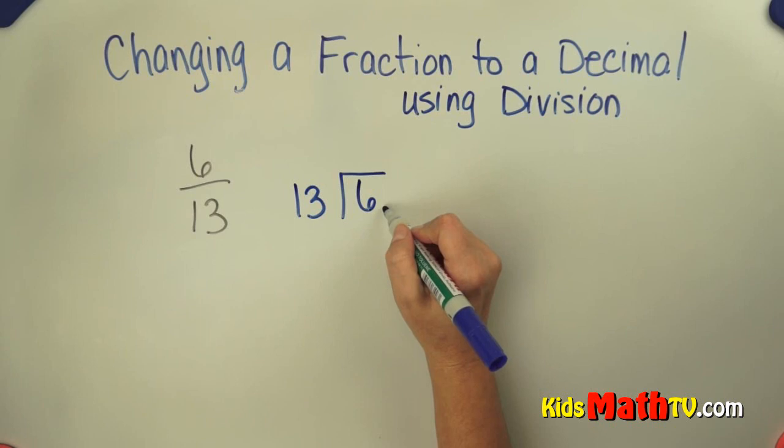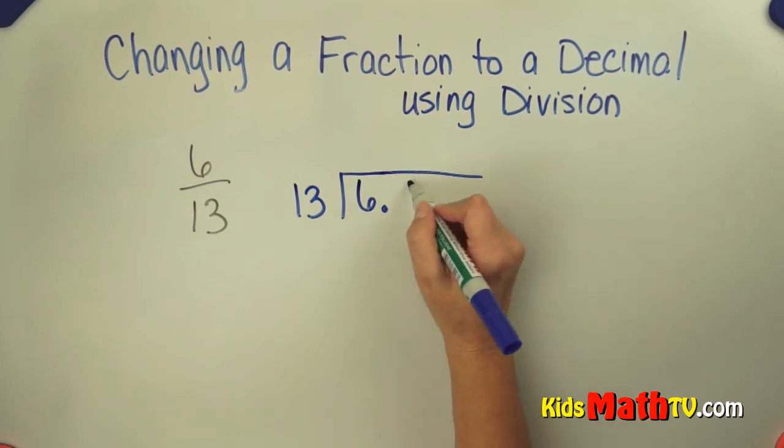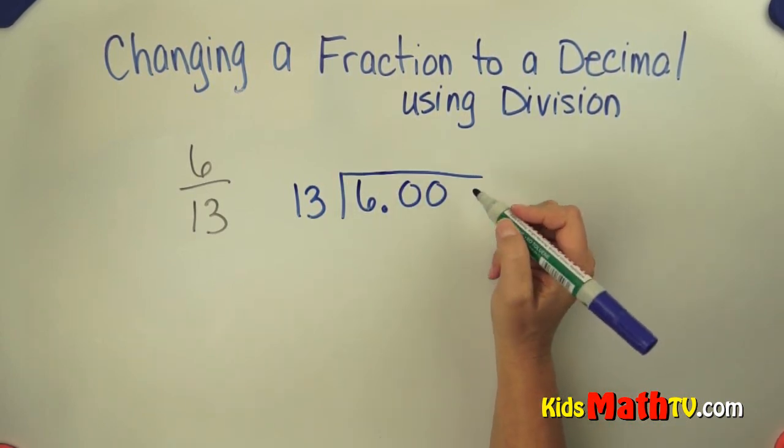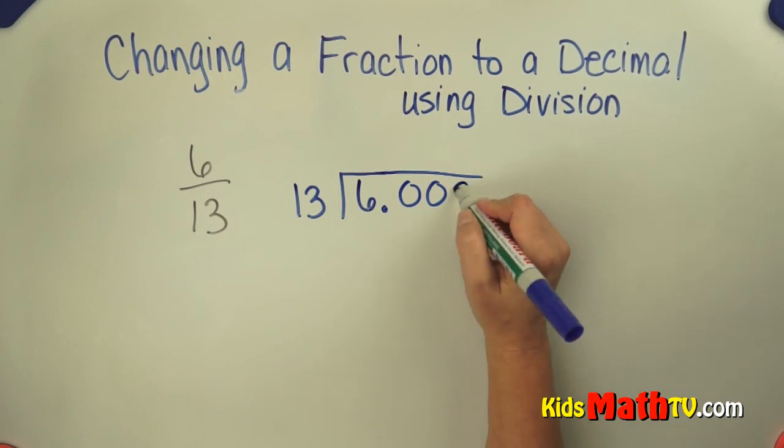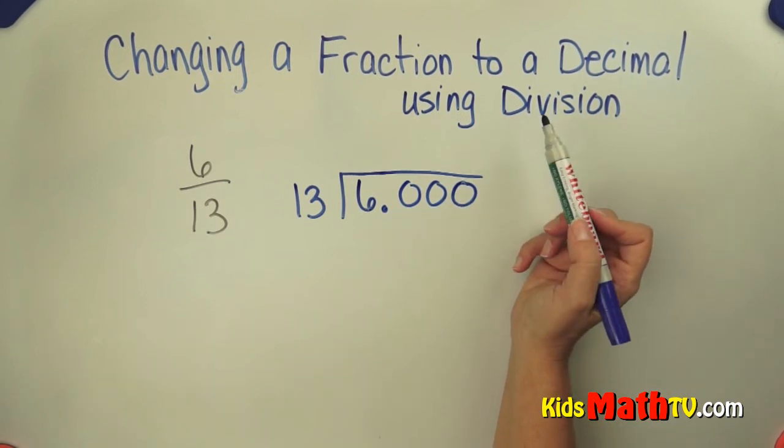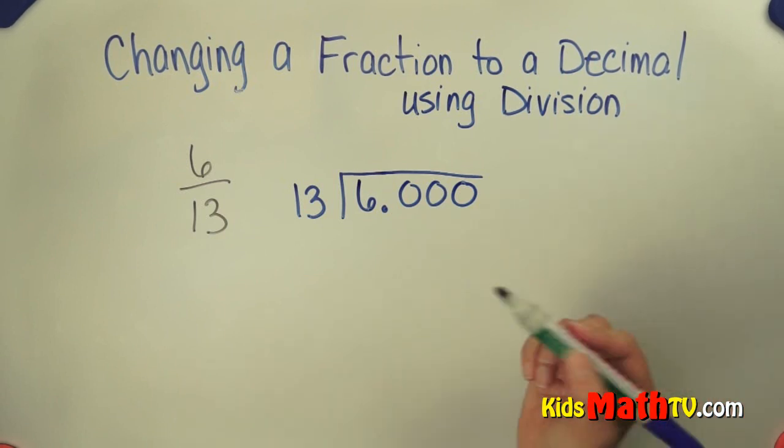We are going to get a decimal answer. We're going to put our decimal and some zeros here. I'm going to put three zeros because I want to get to hundredths. I'm going to round it to the nearest hundredth.